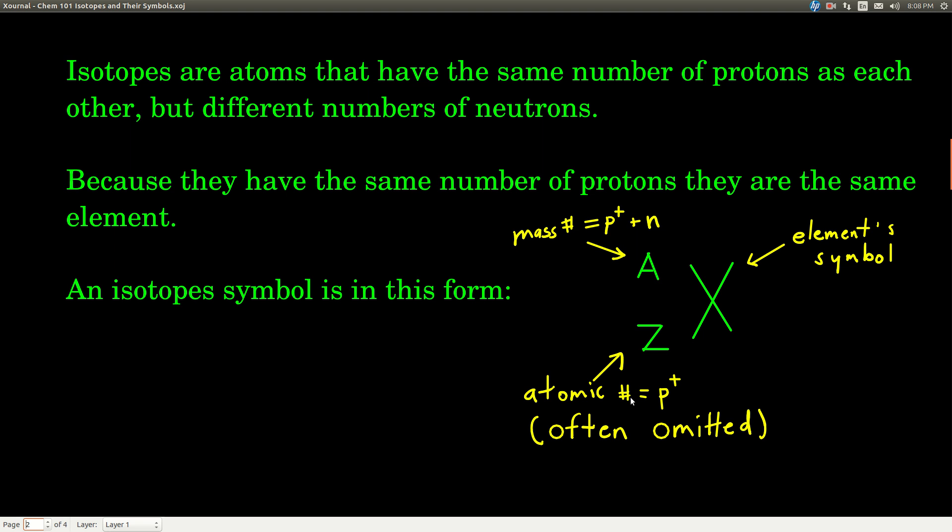The atomic number, we give the symbol Z, and this is how many protons there are. A lot of times you'll see Z omitted because it's redundant. Once we know which element it is, we can look on the periodic table and tell how many protons it has.